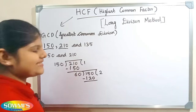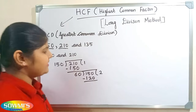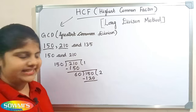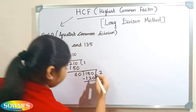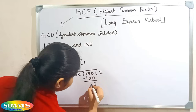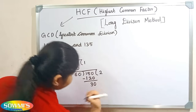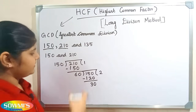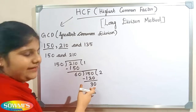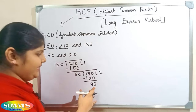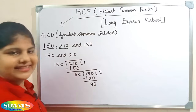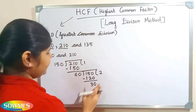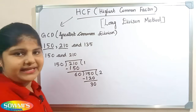Now we will subtract it: 150 minus 120 will be 30. Now we will repeat the process again because here the remainder is 30.